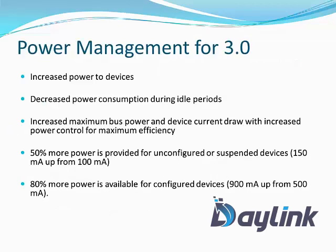USB 3.0 is also 100% backward compatible with USB 2.0. Regarding power management: it increases power to devices, decreases power consumption, and increases maximum bus power. 50% more power is provided for unconfigured or unsupported devices, and 80% power is available for configured devices.